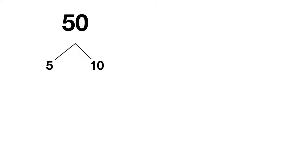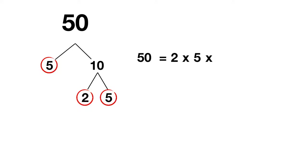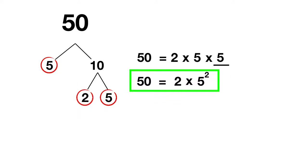Now it's time for you to try on your own. Write out the prime factors of 50 using exponents. You have to start by prime factoring 50 — you can split it up into 5 times 10. Then 5 is a prime number, but 10 gets split up into 2 times 5. So you can write that 50 is equal to 2 times 5 times 5. Then using exponents, 5 is being multiplied once, twice, so 5 to the power of 2 — giving us 2 times 5 to the power of 2.